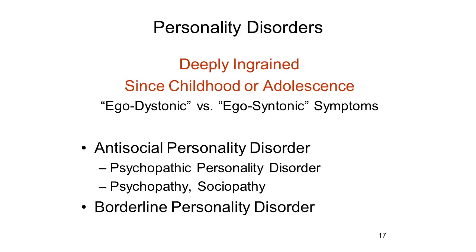The personality disorders consist of deeply ingrained patterns of maladaptive behavior, which typically begin to develop in adolescence, sometimes even childhood. To understand the personality disorders a little bit better, recall the distinction between egodystonic and egosyntonic symptoms. Egodystonic symptoms are experienced as alien, as unwanted, not right, by the patient him or herself. The symptoms of the psychoses and neuroses are egodystonic in that sense—the person with schizophrenia is disturbed by the hallucinations, the person with depression is disturbed by their depression. By contrast, the symptoms of the personality disorders are egosyntonic—they're experienced by the patient as part of his or her normal personality.